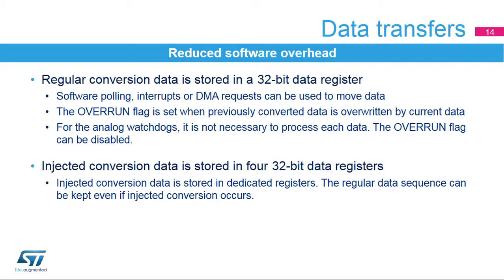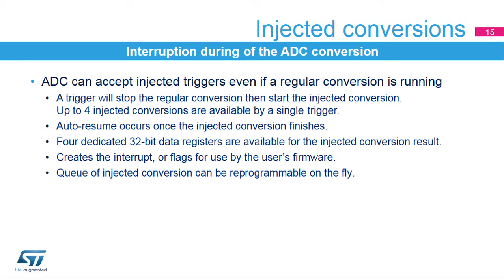For injected channel conversions, four dedicated data registers are available. An injected conversion is used to interrupt the regular conversion and insert up to four channel conversions. Once an injected conversion is finished, the regular conversion sequence can be resumed. The injected conversion result is stored in dedicated data registers. Flags and interrupts are available for the end of conversion or end of sequence. The choices for an injected channel can be reprogrammed on the fly — even if a regular or injected conversion is in progress, you can add a different channel to the queue so that the next injected channel can be different from the previous one.